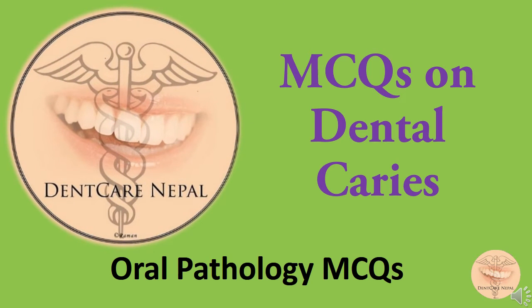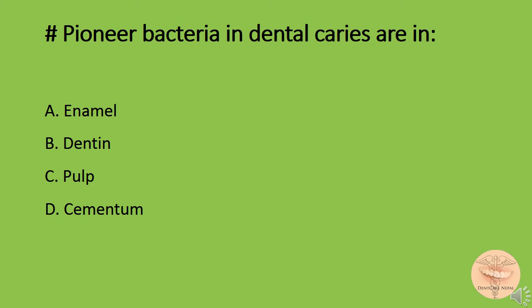Hello again everybody, today we will be discussing some MCQs on dental caries. Pioneer bacteria in dental caries are found in option A: enamel, option B: dentin, option C: pulp, or option D: cementum.